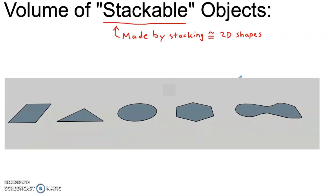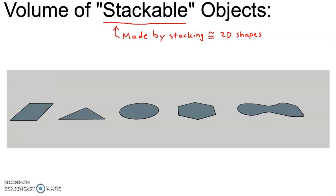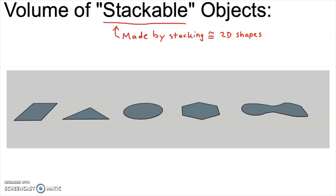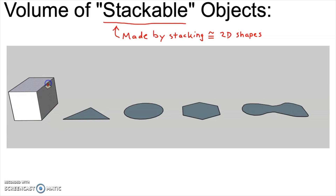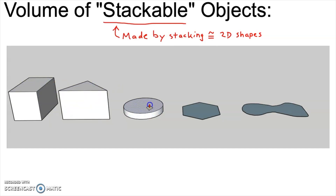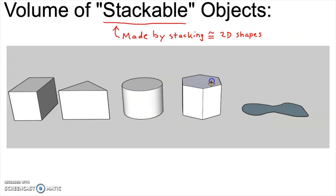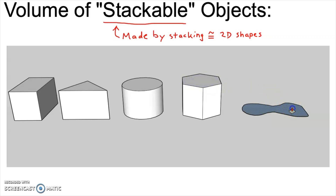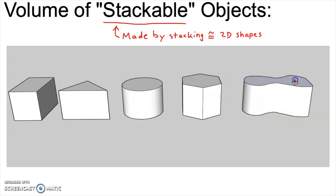For example, you might start with a square, or a triangle, or a circle, or a hexagon, or even just some random squiggly shape. It doesn't matter what you start with as long as it's a two-dimensional shape. If you stack rectangles on top of rectangles, you get a rectangular prism. If you stack triangles on top of triangles, you get a triangular prism. If you stack circles on top of circles, you get a cylinder. If you stack hexagons on top of hexagons, you get a hexagonal prism.